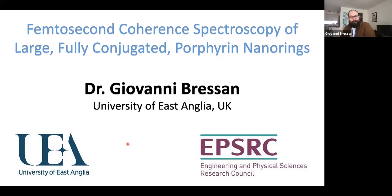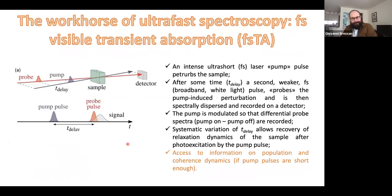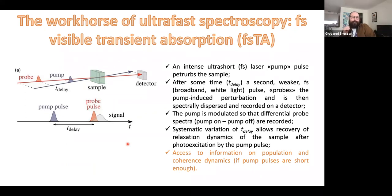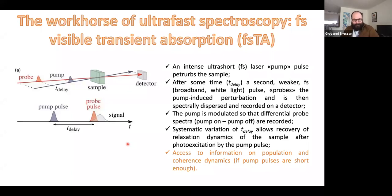I'm going to start from the basics, describing how the simplest time-resolved experiment in the femtosecond to picosecond time domain can be described. The simplest experiment we can conceive is called, in the visible range, transient absorption. It's a two-pulse experiment: a first intense and short femtosecond light pulse induces a perturbation in the sample, and after some time we look at this perturbation by a second, weaker pulse, which is usually broadband — typically a white light in modern days. This second pulse we look at in the frequency domain on a detector.